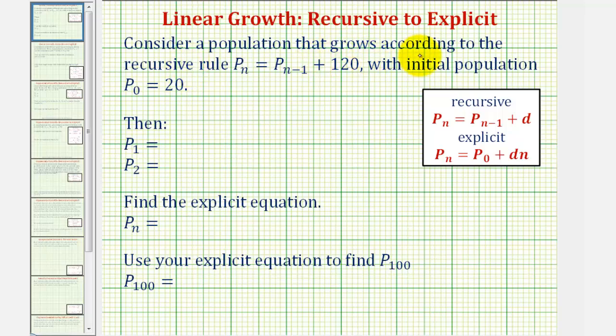Consider a population that grows according to the recursive rule Pₙ = Pₙ₋₁ + 120 with initial population P₀ = 20. We should recognize this recursive formula as linear growth where the common difference d is equal to 120.